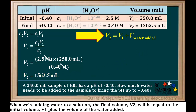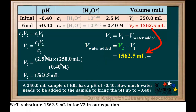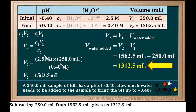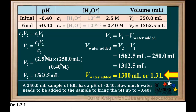When we're adding water to a solution, the final volume V2 will be equal to the initial volume V1 plus the volume of water added. Rearranging to solve for the water that needs to be added: Vwater = V2 − V1. Substituting 1562.5 milliliters for V2 and 250 milliliters for V1, subtracting gives us 1312.5 milliliters. The lowest number of significant figures in our data was 2, so rounding to two significant figures gives us 1300 milliliters, or 1.3 liters.